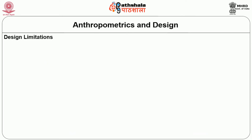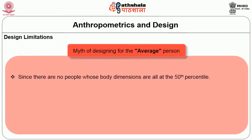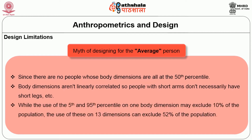What is anthropometrics and design? First, understand the design limitations. There is a myth of designing for the average person, since there are no people whose body dimensions are all at the 50th percentile — the average. Body dimensions aren't linearly correlated, so people with short arms don't necessarily have short legs. While using the 5th and 95th percentile on one body dimension may exclude 10 percent of the population, using these on 13 dimensions can exclude 52 percent of the population.